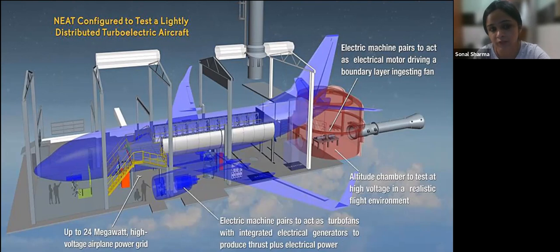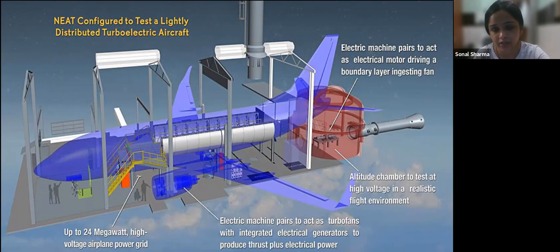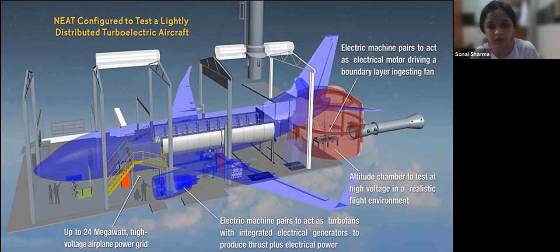Thrust is the force which helps an airplane move forward. In aviation and aeronautics, what we commonly call friction is referred to as drag. Drag is the opposing force that works against thrust.